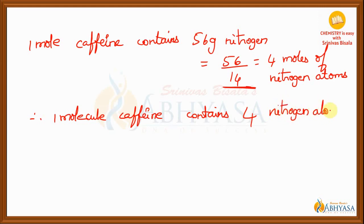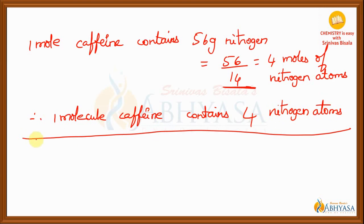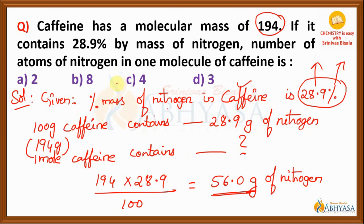That is our answer. One mole of caffeine contains 4 moles of nitrogen atoms means one molecule of caffeine contains 4 nitrogen atoms. Our answer is option C. You can check previous videos for more information on this particular topic.